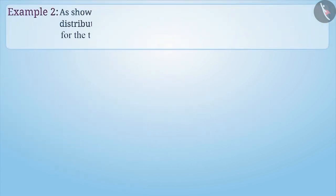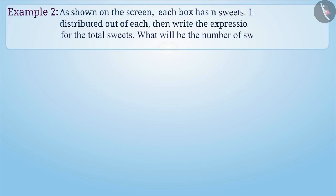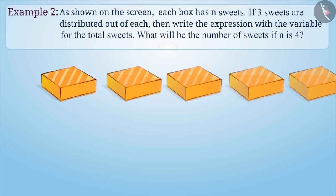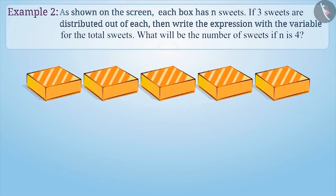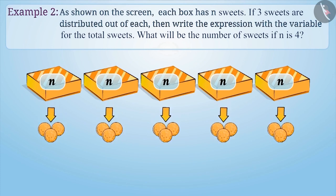There are n sweets in each box shown on the screen. If 3 sweets from each box are distributed, then write an algebraic expression for the total number of sweets. Find the total number of sweets when n is equal to 4. There are 5 boxes each containing n sweets. If 3 sweets from each box are distributed, then the remaining number of sweets in each box will be n minus 3.